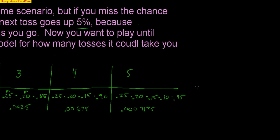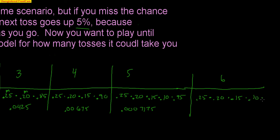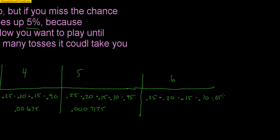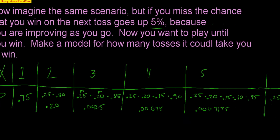The sixth option is the final one. I miss 25%, second time 20%, third time 15%, fourth time 10%, fifth time 5%. Because I've slowly increased my odds 5% every single time, on that sixth dart I now have a 100% chance of winning — I am guaranteed to win. So 0.25 times 0.20 times 0.15 times 0.10 times 0.05 times 1 equals 0.0000375. Add all those probabilities together and you get 1.